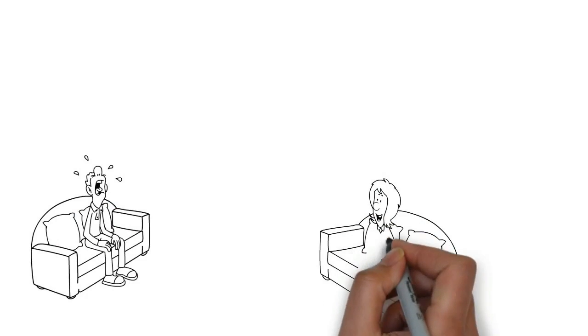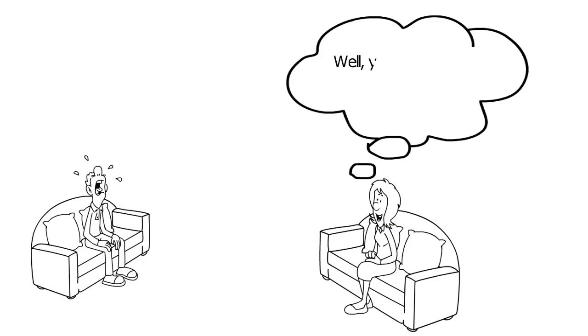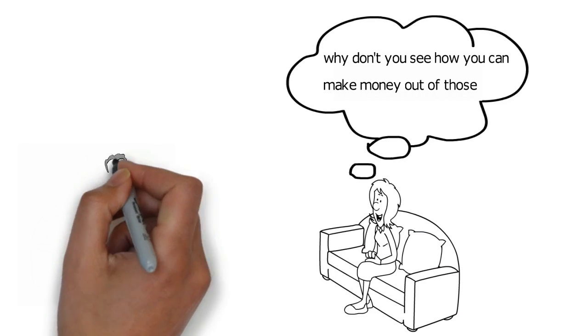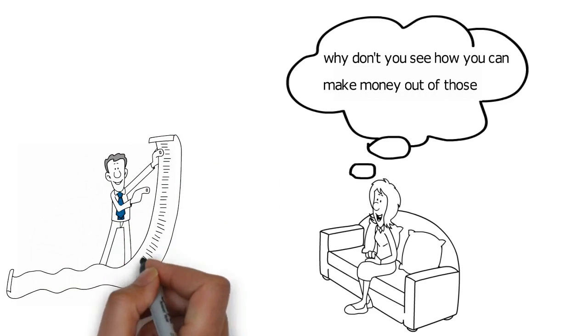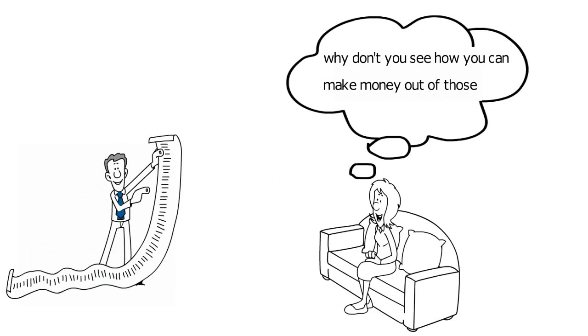His mother asked what was wrong, and he explained. So she said, well, you have a lot of interests and hobbies. Why don't you see how you can make money out of those? That was better, but he had a broad range of interests, and couldn't see himself doing any of them all the time. And how would he make money out of them?